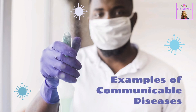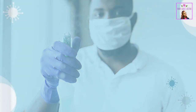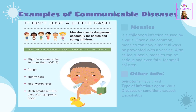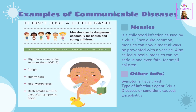Measles is a childhood infection caused by a virus. Once quite common, measles can now almost always be prevented with a vaccine. Also called rubeola, measles can be serious and even fatal for small children. Symptoms include fever and rash. Type of infectious agent: Virus. Diseases or conditions caused include encephalitis.